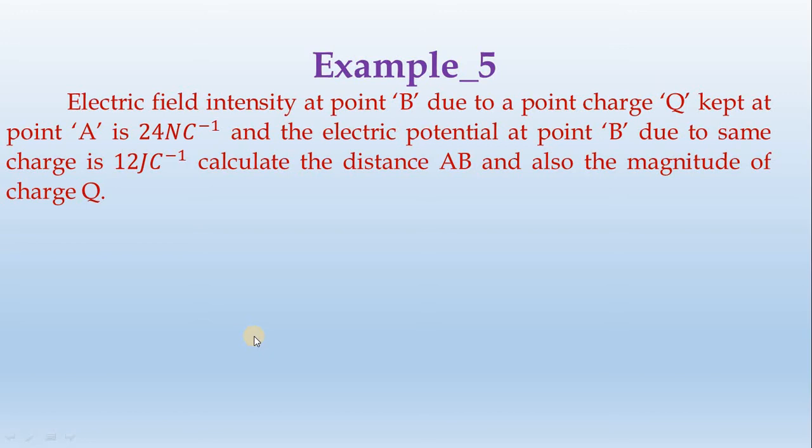Electric field intensity at point B due to a point charge Q kept at point A is 24 Newton per C, and the electric potential at point B due to the same charge is 12 Joule per C. Calculate the distance AB and also the magnitude of charge Q.